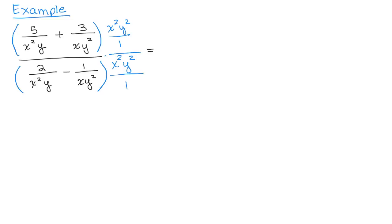We need to distribute. So we have the first term in the complex fraction in the numerator is 5 over x squared y times the x squared y squared plus 3 over x y squared times the x squared y squared.